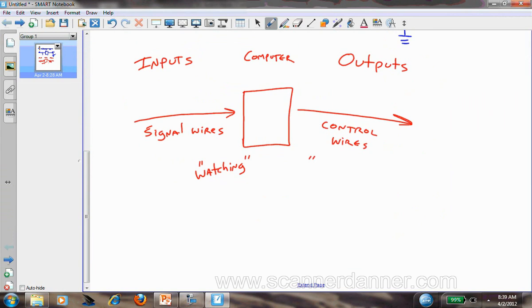Signal wires, we could say the computer is watching, or watching these circuits. And control wires, obviously, in turn, is we are controlling. We're going to turn things on, turn things off on the output side.